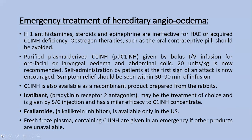Emergency treatment of hereditary angioedema: since attacks occur spontaneously, recurrently, and severely, H1 antihistamines, steroids, and epinephrine should always be available, but are usually ineffective for HAE or acquired C1 inhibitor deficiency; estrogen therapy such as contraceptive pills should be avoided. Verified plasma-derived C1 inhibitor given by bolus IV infusion is used for oropharyngeal or laryngeal edema and abdominal colic at a dose of 20 units per kg. Self-administration by the patient at the first sign of attack is now encouraged; symptom relief should be seen within 30 to 90 minutes. C1 inhibitor is also available as a recombinant product prepared from rabbits.